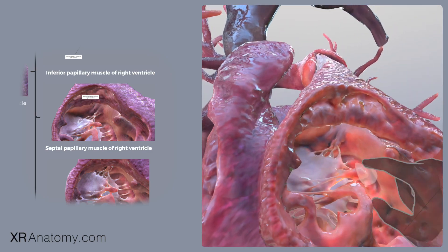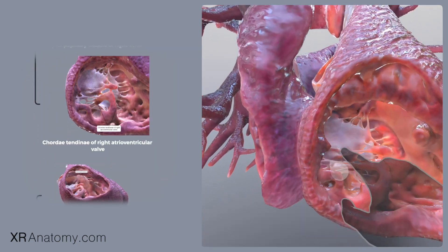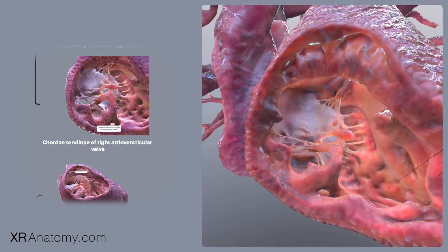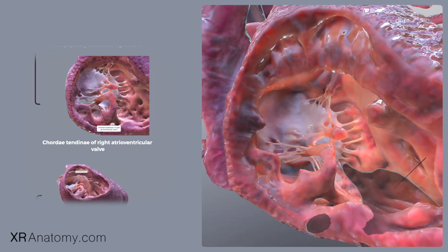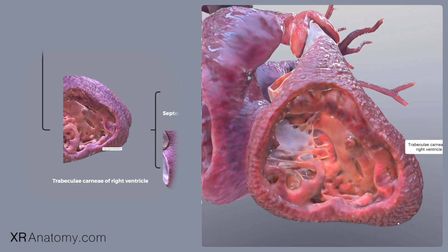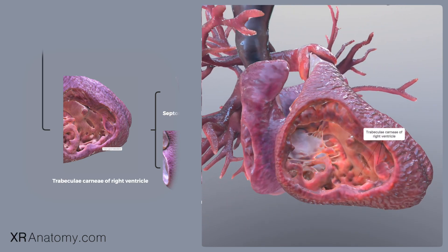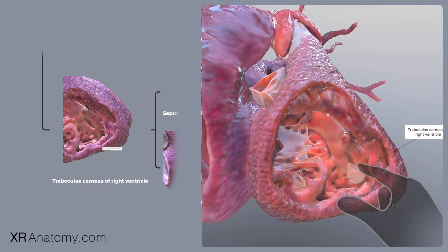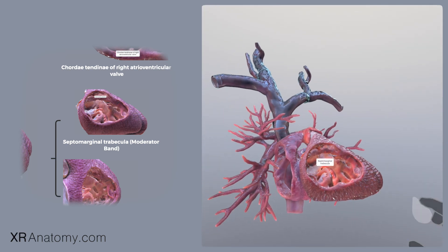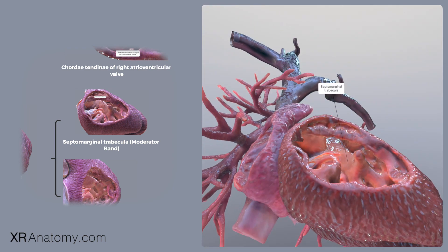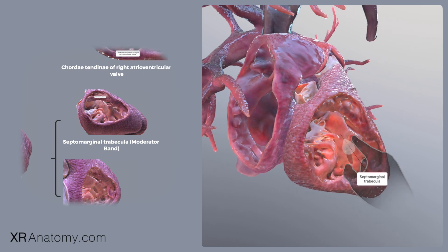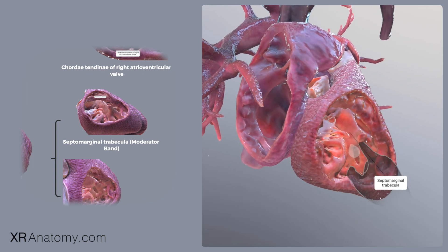The papillary muscles are connected to the valve leaflets via fibrous strings known as cordae tendinii. A special feature specific to the right ventricle is that the septal leaflet of the tricuspid valve is directly anchored to the septum. Among the trabeculae carneae, the septomarginal trabecula stands out due to its critical role — it is a muscular band connecting the anterior papillary muscle to the interventricular septum, forming a direct path between the lower portion of the interventricular septum and the base of the anterior papillary muscle.